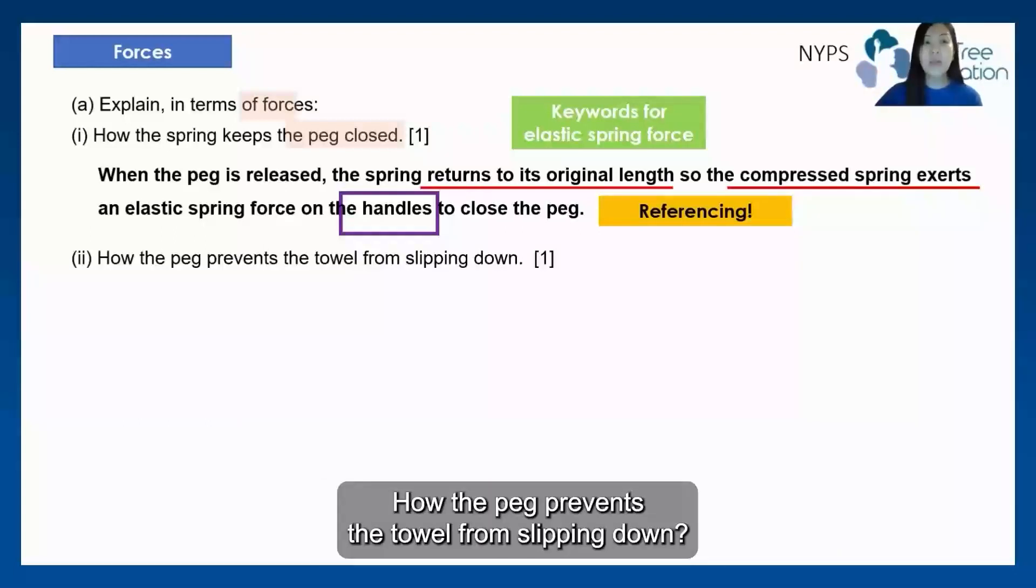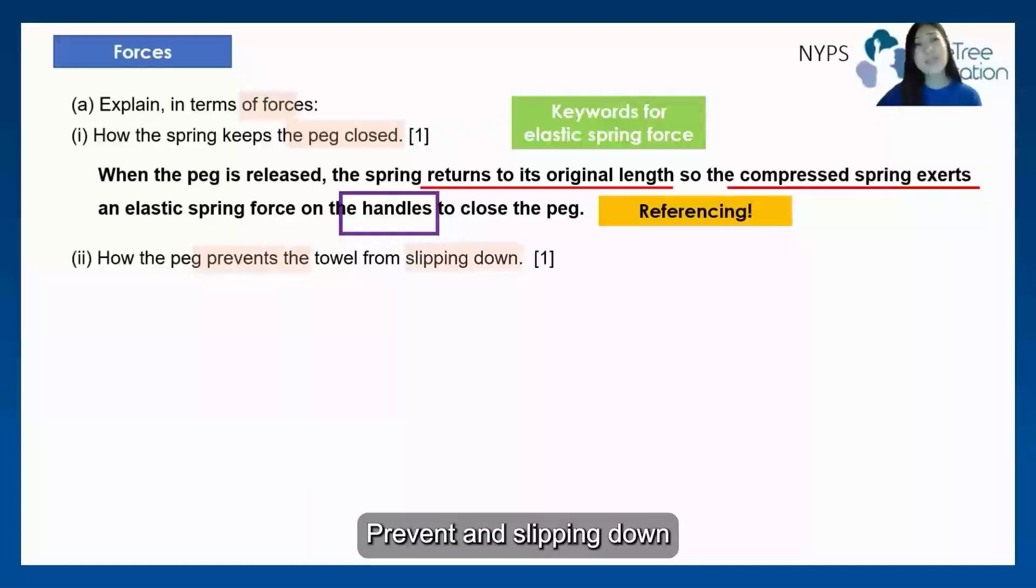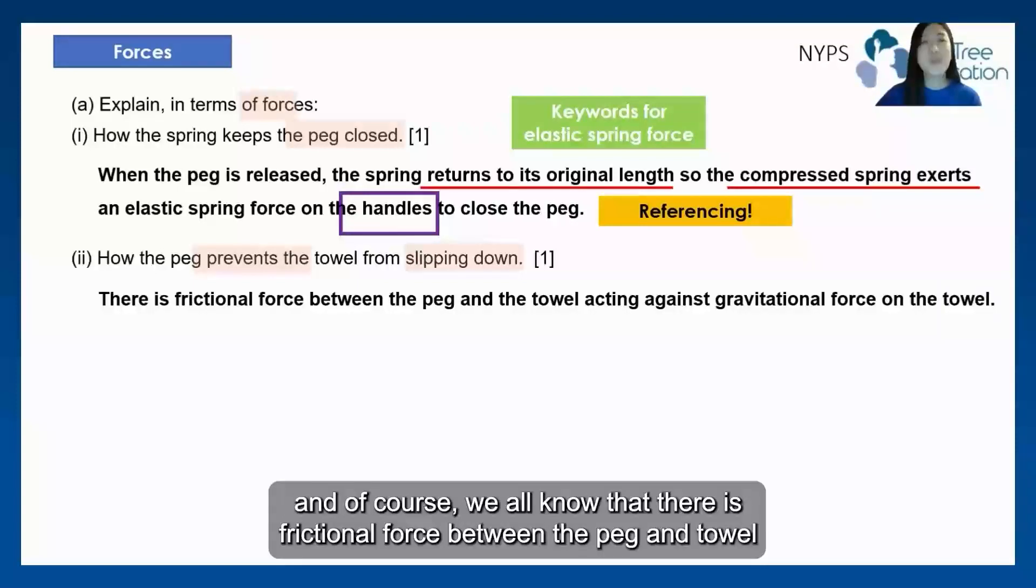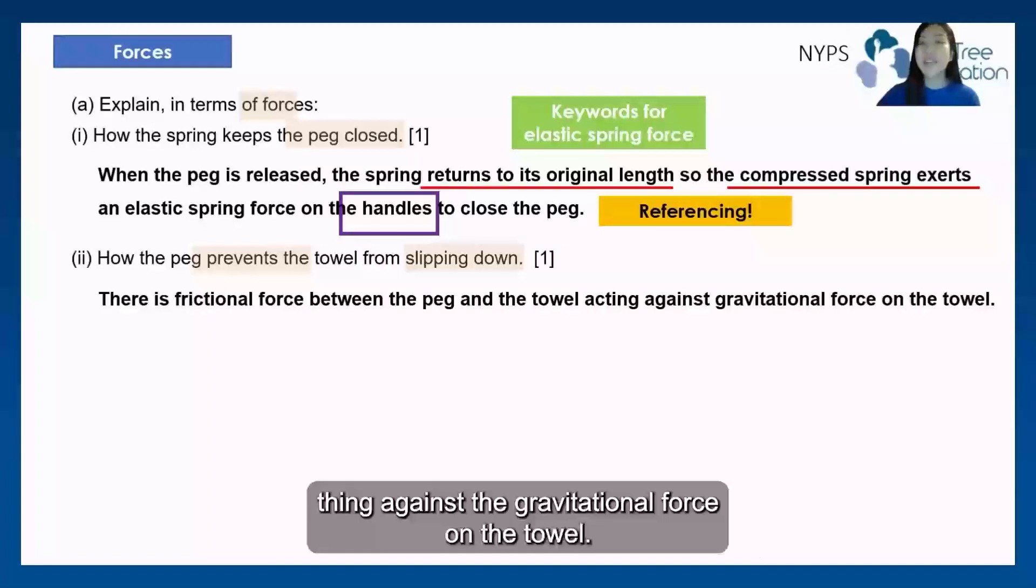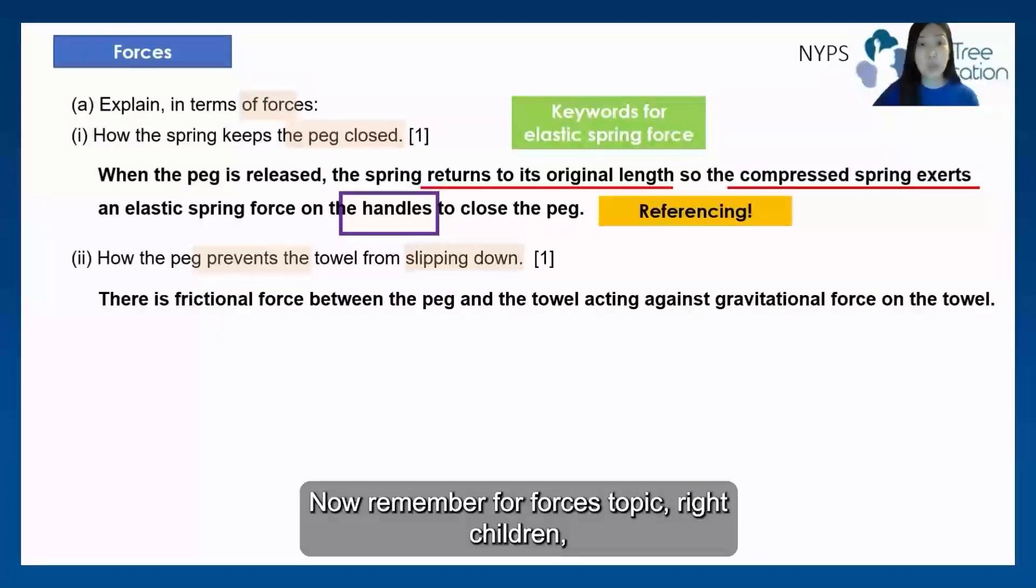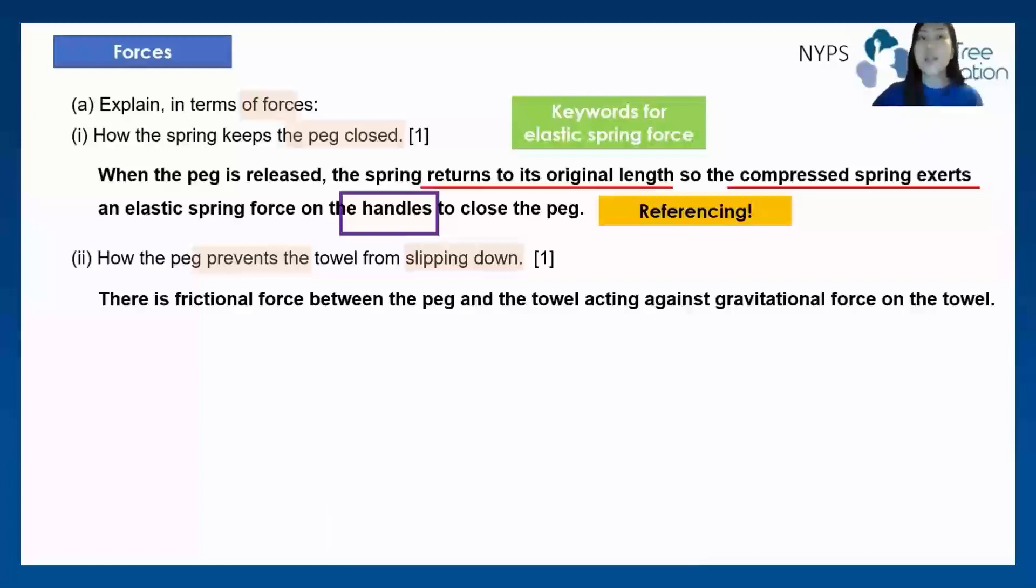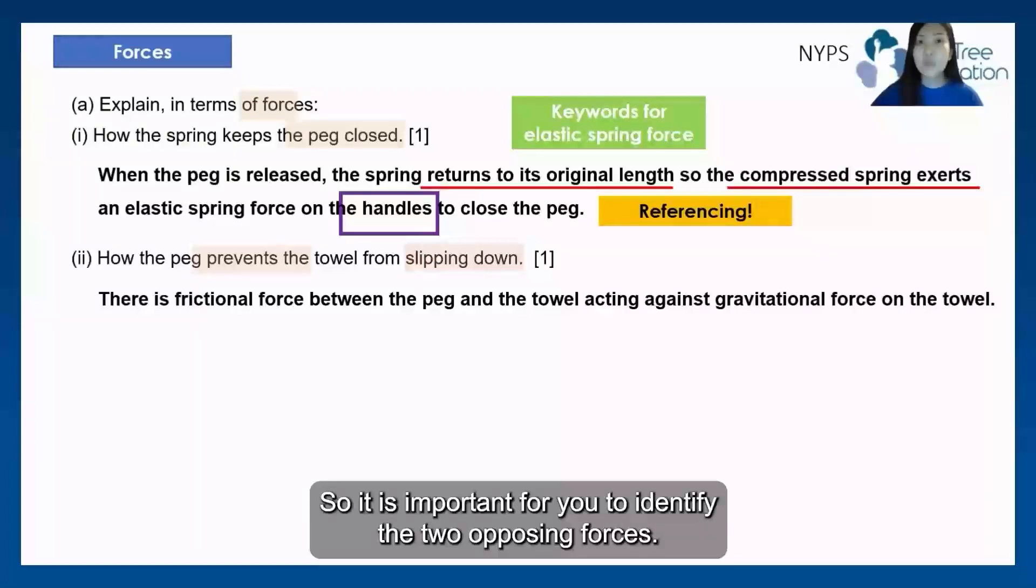Now, let's go on to the part two. The peg prevents the towel from slipping down. Prevents and slipping down are the key question terms that we should highlight in this question. And of course, we all know that there's frictional force between the peg and towel acting against the gravitational force on the towel. Now, remember for forces topic, children, we're always talking about the two opposing forces.